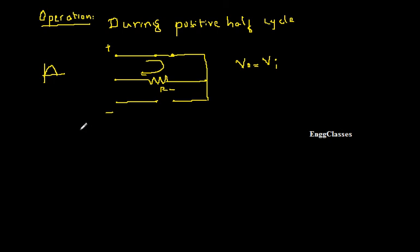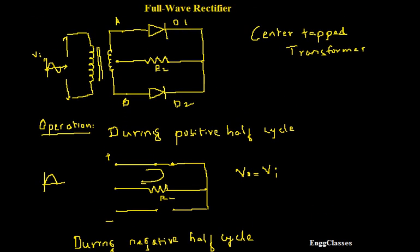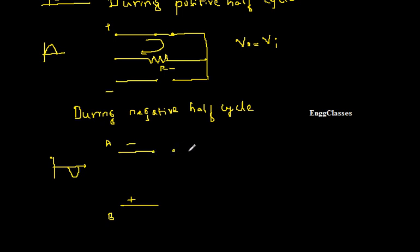Now let me consider what happens during the negative half cycle of the input. I considered the positive half cycle in the previous operation, and now I consider the negative half cycle. I have two points A and B. Point A will be negative with respect to point B, so point B is positive and point A is negative. Because of the negative on point A, diode D1 becomes reverse biased, and diode D2 becomes forward biased. D1 is replaced with an open circuit and D2 is replaced with a short circuit.